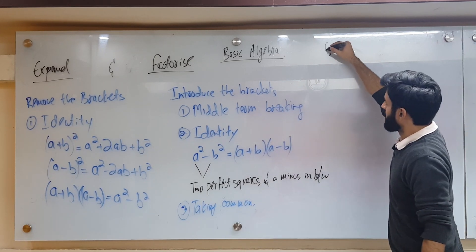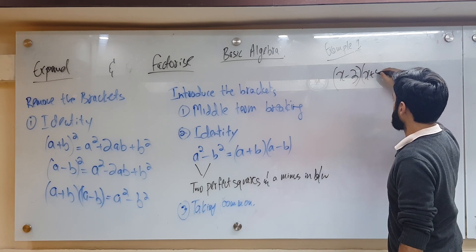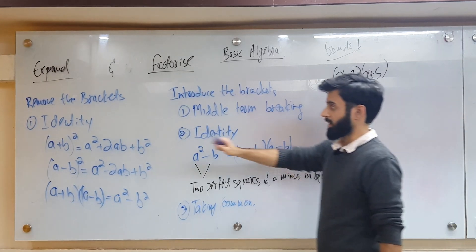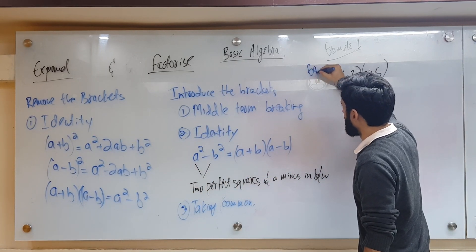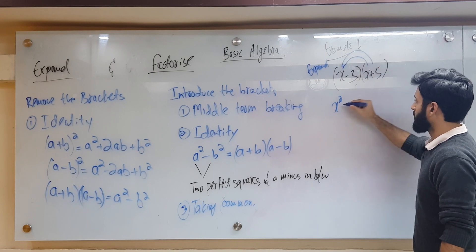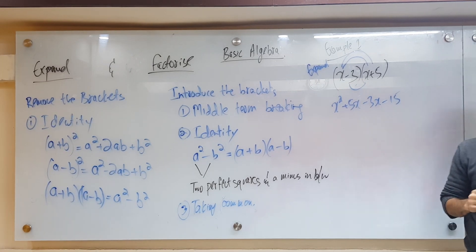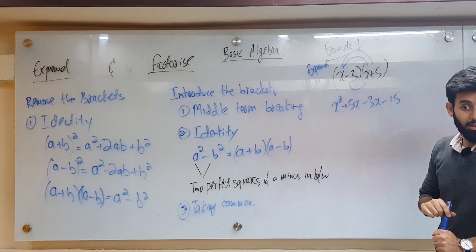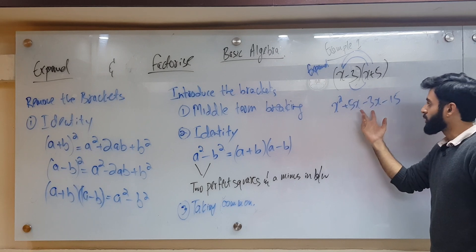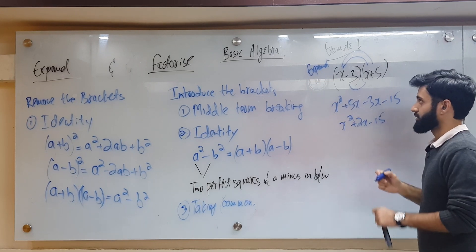Example one: (x - 3)(x + 5). We will expand it because we have to remove the brackets. x multiplied by x gives x², and x multiplied by 5 gives 5x. Then -3 times x gives -3x, and -3 times 5 gives -15. Now expand and simplify: 5x and -3x are like terms, so we get x² + 2x - 15.